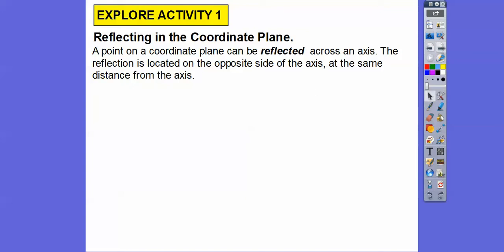So let's first talk about reflecting in the coordinate plane. A point on a coordinate plane — your x and y axes — can be reflected across an axis. The reflection is located on the opposite side of the axis at the same distance.